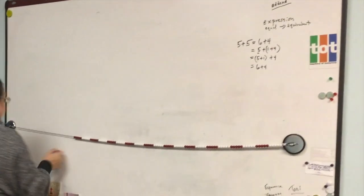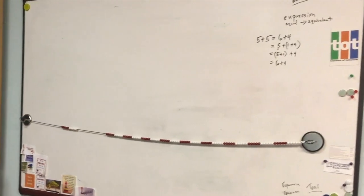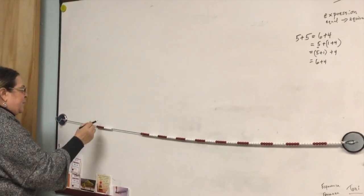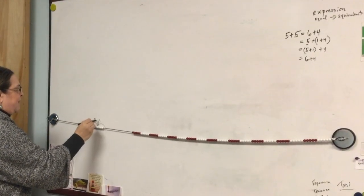I'm going to model that on the bead string for us. Okay, here's our bead string. Have you seen the bead string before? Yeah. In first grade. In first grade, wow. So, here's our five, and our five.